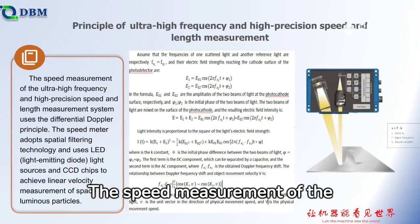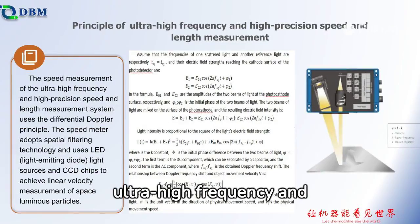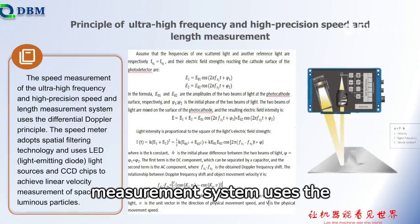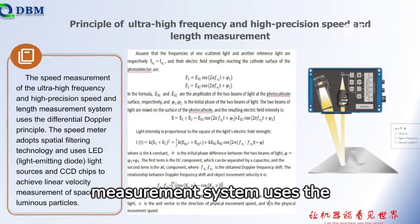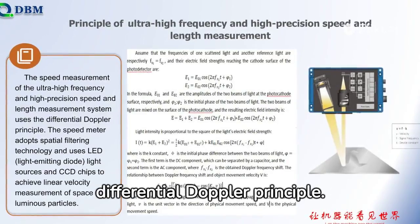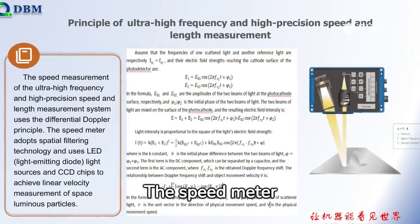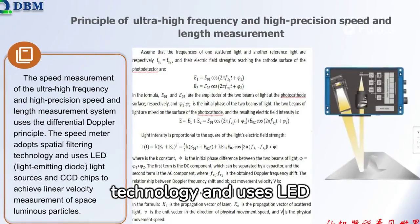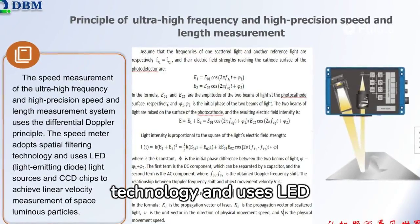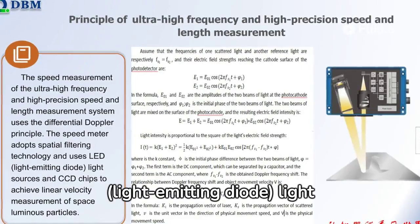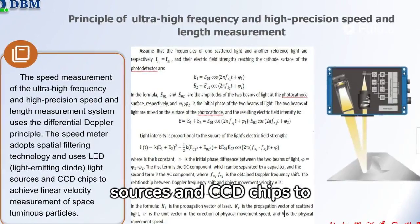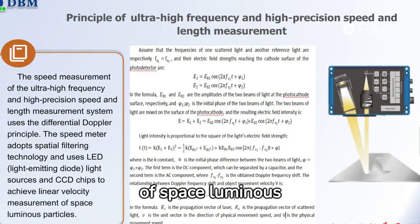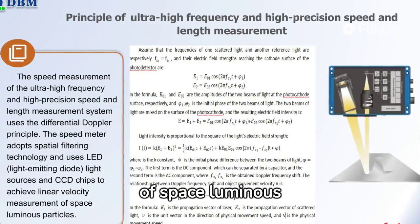The speed measurement of the ultra-high frequency and high-precision speed and length measurement system uses the differential Doppler principle. The speed meter adopts spatial filtering technology and uses LED (light-emitting diode) light sources and CCD chips to achieve linear velocity measurement of space luminous particles.